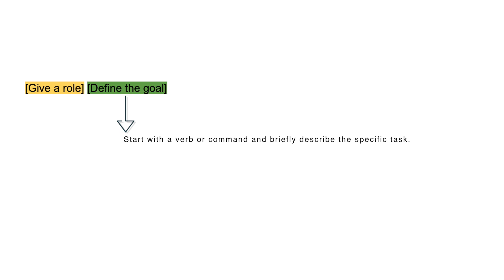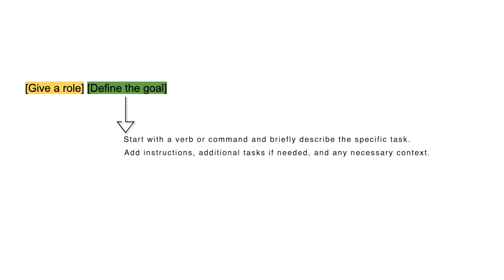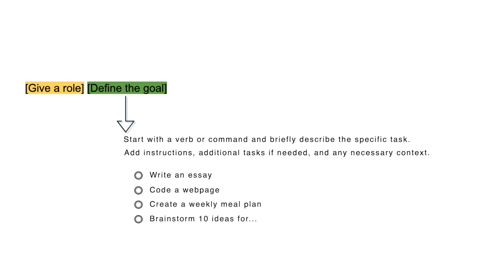The second part of the 5-part formula is to define the goal — this is an essential part of your prompt that you should never skip. Start with a verb or command and briefly describe the specific task. You can add instructions, additional tasks, and any necessary context. Examples include: write an essay, code a webpage, create a weekly meal plan, or brainstorm 10 ideas for XYZ. This is something you cannot skip when prompting your LLM.